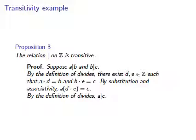Associativity allows us to rearrange the parentheses, as shown. d times e is the factor we're looking for. Invoke the definition of divides again, this time synthetically, to assert that a divides c. The definition of transitivity is satisfied. If arbitrary elements a, b, and c are related, as supposed, we have shown that a must be related to c. That's what transitivity means.